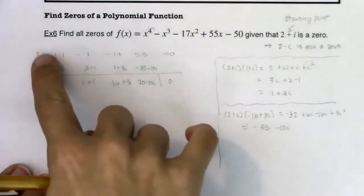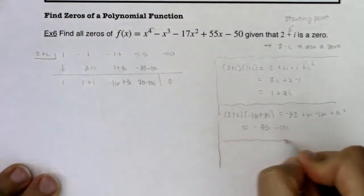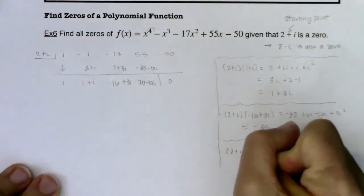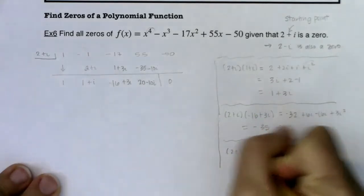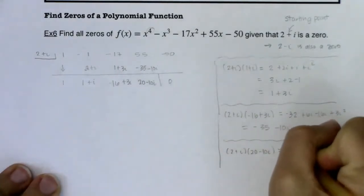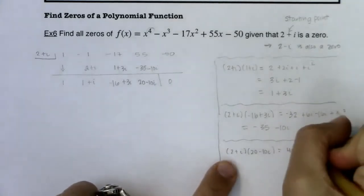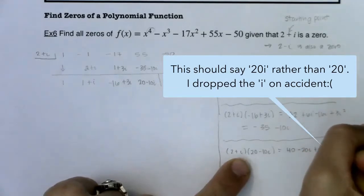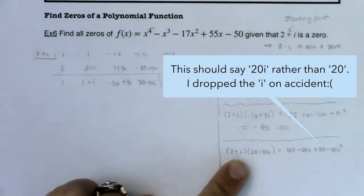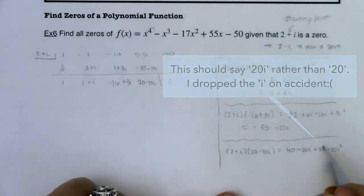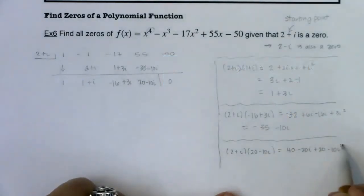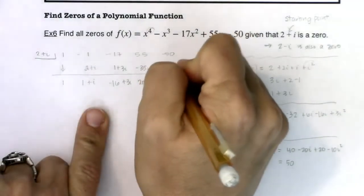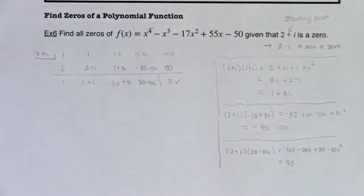Then I need to do two plus i times 20 minus 10 i. First is 40, outer is minus 20 i, inner is plus 20 i, last is minus 10 i squared. The i's are canceling — that's great. Negative 10 i squared is plus 10, so this becomes 50. I put 50 here, and sure enough I get zero. And I should have — that's great.